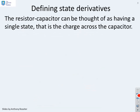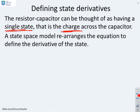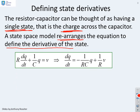What about the state space model then? A resistor-capacitor can be thought of as having a single state. We're going to choose as the state the charge across the capacitor. To find a state space model, all we're going to do is rearrange the model we've got to define explicitly the derivative of the state, which we've chosen to be Q.